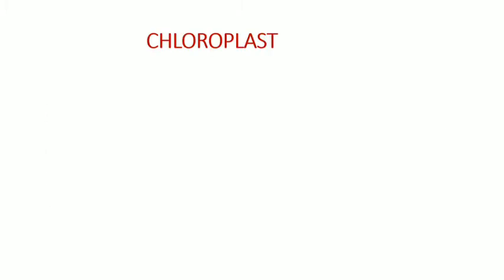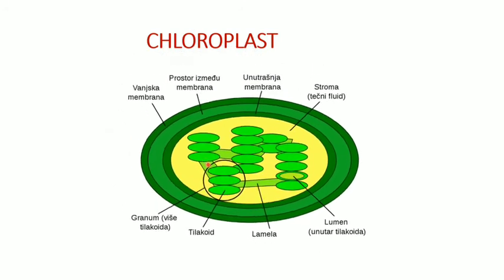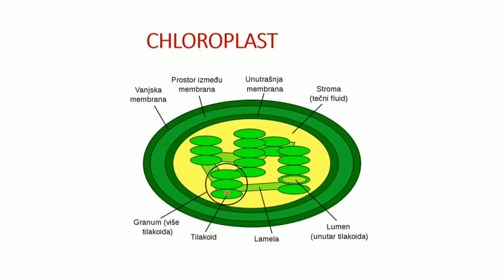In the structure diagram, you can observe the thylakoids present, and the stack of thylakoids is called a granum. They are connected by the lamella. Here you can see the outer and inner membranes and the intermembrane space. The stroma is where organelles can be present in the chloroplast cytoplasm — these are the parts of the chloroplast.